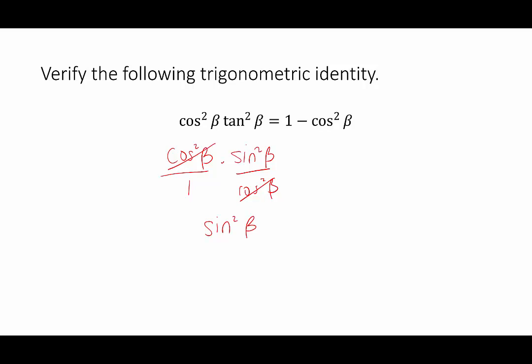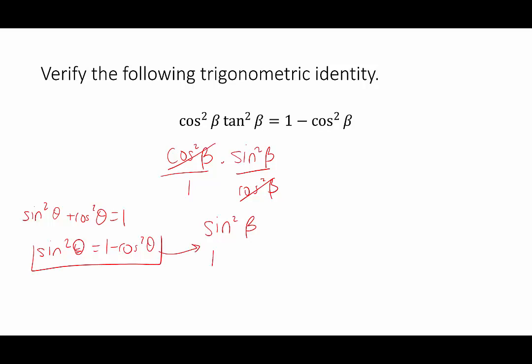How does sine squared beta relate to 1 minus cosine squared beta? This goes back to the Pythagorean identity. Since sine squared theta plus cosine squared theta equals 1, if we subtract cosine squared theta from both sides, we get sine squared theta equals 1 minus cosine squared theta. So we rewrite sine squared beta as 1 minus cosine squared beta, and we have a match. When verifying trigonometric identities, we only manipulate one side — that's why we rewrote our side to match the other, leaving the right-hand side as is.